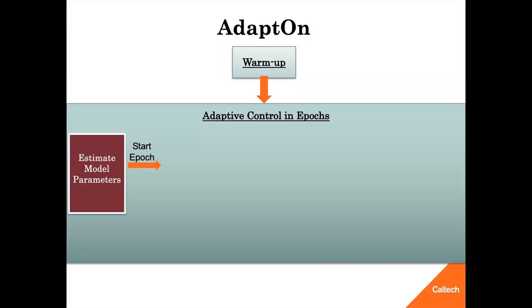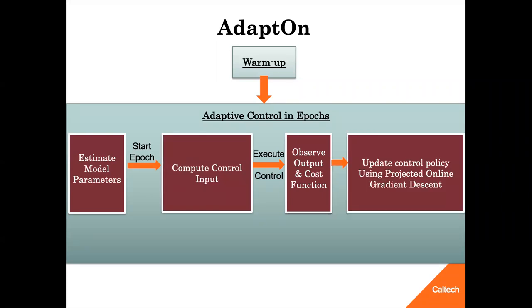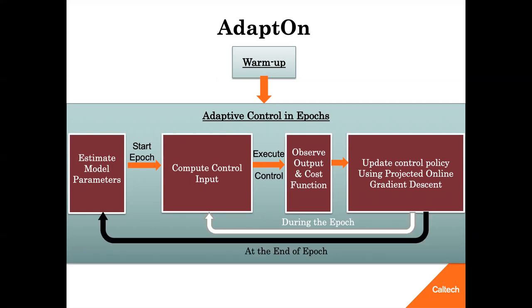It then calculates the control input. For the details of control input generation, please refer to the paper on arXiv. It then executes the control input and observes the output and the cost function. Using these, AdaptOn updates the control policy using projected online gradient descent. During each epoch, AdaptOn repeats these steps sequentially. At the end of each epoch, AdaptOn returns back to estimate the model dynamics again, further exploiting the newly gathered data, thanks to the proposed closed-loop system identification method.